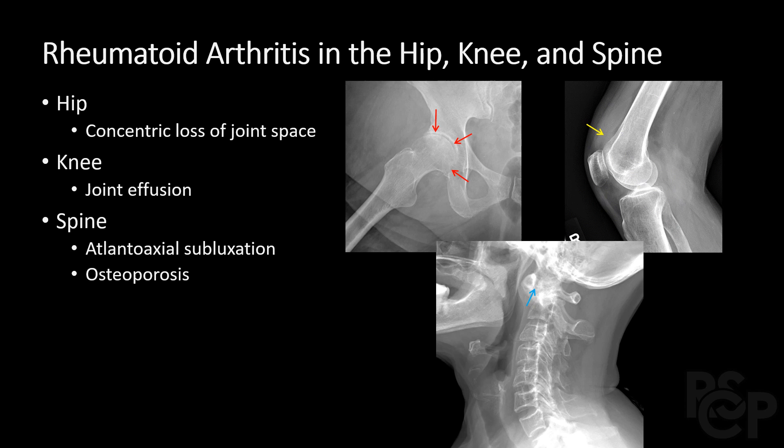Now I'll discuss rheumatoid arthritis in the hip, knee, and spine. The red arrow shows concentric hip joint space narrowing. The yellow arrow shows abnormal soft tissue attenuation anterior to the distal femur, consistent with a joint effusion in the knee. The blue arrow shows subluxation of C1 on C2 with abnormal widening of the atlantodental interval. The bones are diffusely demineralized.